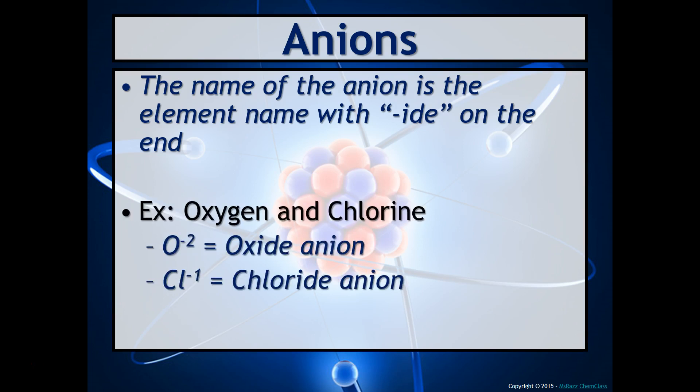So, for example, oxygen and chlorine. Oxygen with a minus-2 charge is called the oxide anion, and chlorine with a 1-minus charge is called the chloride anion. Notice the IDE ending on each of those words.